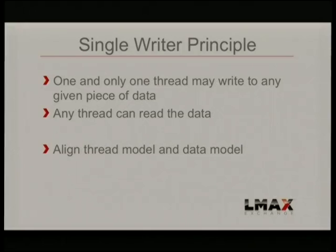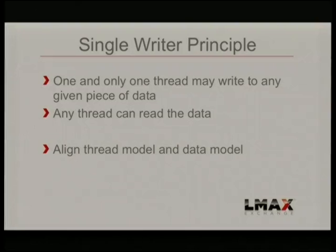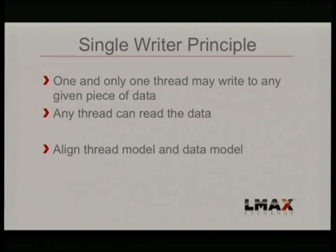The second key technique that really drove a lot of the design of the Disruptor, and is probably the most important thing to get right in your code, is the single-writer principle. Martin Thompson has written about this in great detail — basically what it says is that one and only one thread may write to any given piece of data, but any thread can read the data. What it really drives you to do is align your thread model and your data model so that they work together instead of introducing a lot of contention. A lot of people spend time thinking about their data model and architecture, but don't even really register that their software has a thread model. All software has some kind of thread model — it might be single-threaded, it might spawn as many threads as we can. What you really want is a thread model where each thread owns the data it works with and doesn't have to fight for access with other threads. There are times where that's not possible or not sensible, but it does tend to work out really well if you're able to do it.